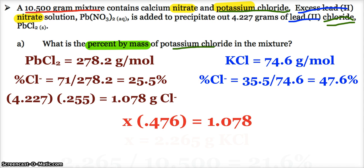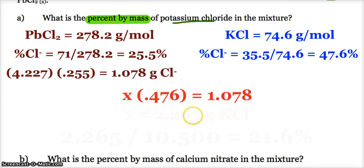So whatever mass of potassium chloride I have, call it X, 47.6% of it is going to equal 1.078 grams. So when I solve for X, that means there was 2.265 grams of potassium chloride in the mixture. That's how much potassium chloride would give me 1.078 grams of chloride. And so that is my answer.